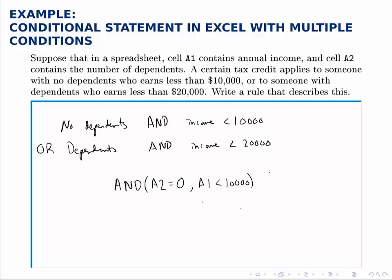The second AND statement is that the dependents is more than 0—this person has dependents—and income is less than $20,000.